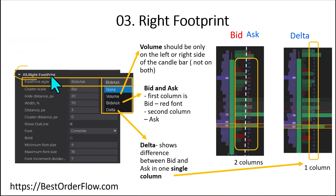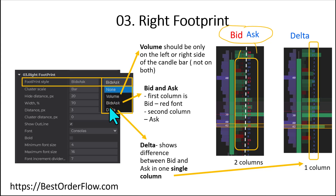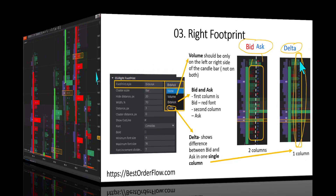Under section 3 we can fine-tune the right side of the footprint. On the right side we can display bid and ask — bid on the left side and ask on the right side — or instead of bid and ask we can select to show only a delta. Delta is the difference between bid and ask, represented in a single column on the right side of the candle.